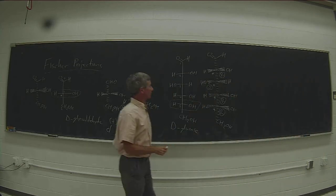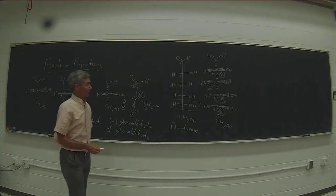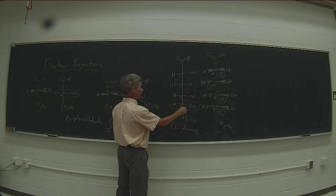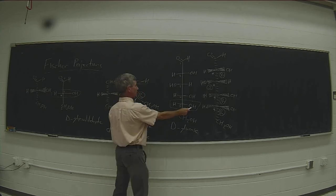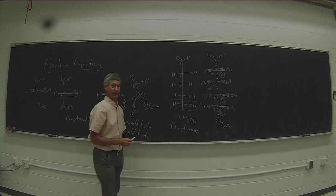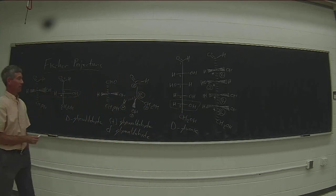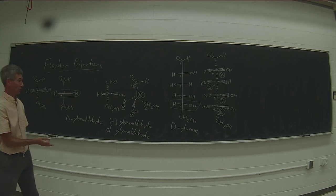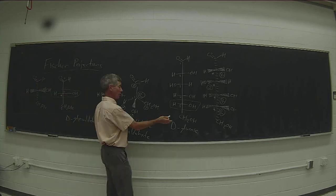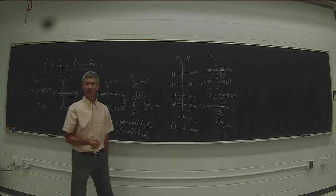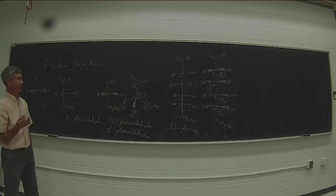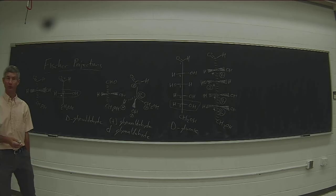So there are four stereocenters in D-glucose. D-glucose, where stereocenter number five has the OH on the right in the Fischer projection, happens to be dextrorotatory. And not all of the D-series sugars are dextrorotatory — there are several D-series sugars that are levorotatory.